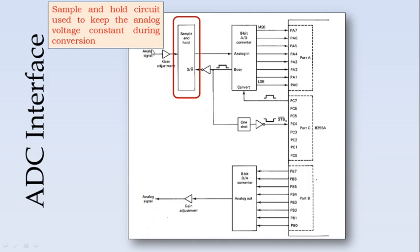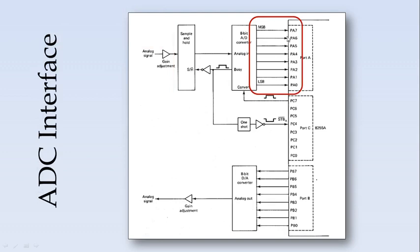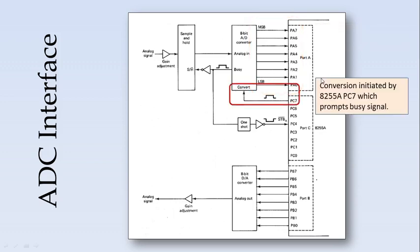Even if there is a change in analog signals, at the moment the sample and hold control signal is given, that value will remain constant till the end of conversion. Port A pins 0 to 7 — 8 pins — are connected to the ADC for reading the values of the digital equivalent count. Next, PC7, Port C pin number 7, is used to give the start of conversion for the ADC. After the ADC has finished conversion, it will read the count. For the start of conversion, PC7 is used.